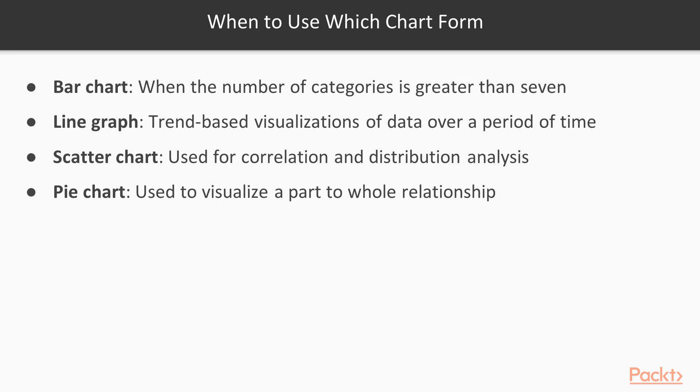Scatter chart: scatter charts are primarily used for correlation and distribution analysis. It is good for showing the relationship between two different variables where one correlates to another or does not correlate. Pie chart: a pie chart typically represents numbers in percentages, used to visualize a part to whole relationship.